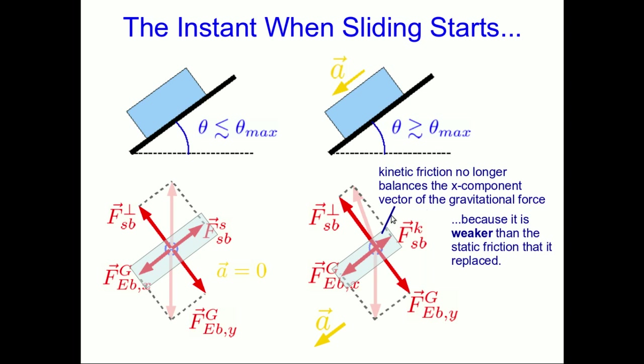In other words, this kinetic friction that acts between the block and the surface once the block starts sliding is weaker than the static friction that was acting between them just a moment before, before the block started to slide.